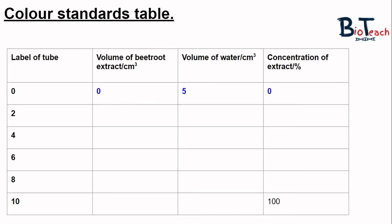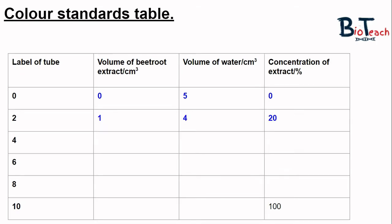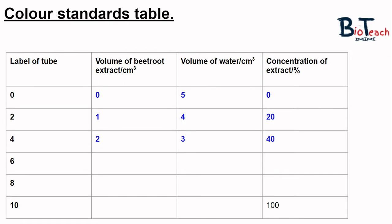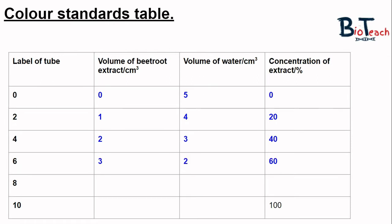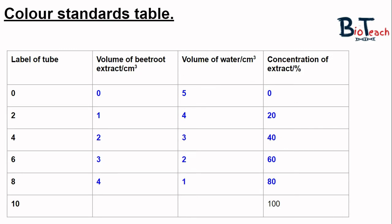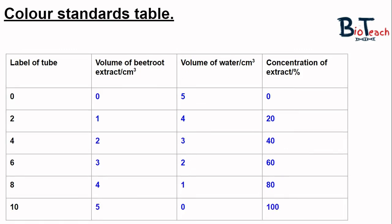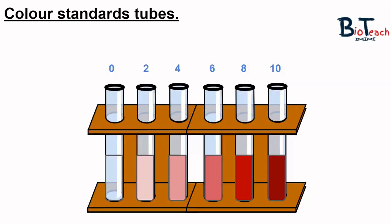To make a 0% concentration of beetroot, you simply add 5 centimetres cubed of water to the tube labelled 0 and no beetroot extract. You continue to make the following tubes for 40%, 60%, and 80%, and lastly 100%, comprised of 5 centimetres cubed of beetroot extract only and no water at all. By the time you've made these colour standards you should have a test tube rack with a colour gradient — 10 being the darkest and 2 being the weakest.